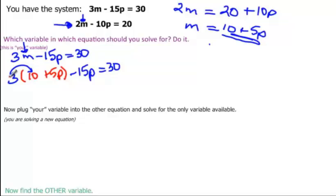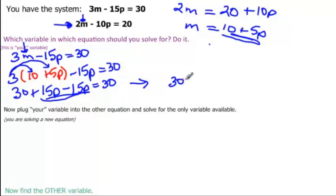Again, we have to distribute because we have an expression here. So 3 times 10 would be 30. 3 times 5p would be plus 15p, minus 15p is equal to 30. When we combine our like terms, they actually cancel each other out because one's a positive p and one's a negative 15p. So this actually tells me that 30 is equal to 30, which is a true statement.